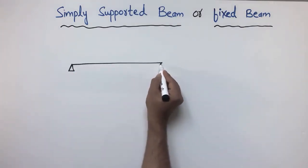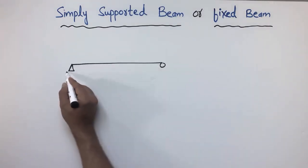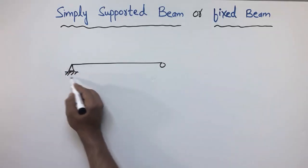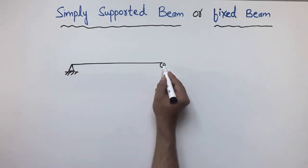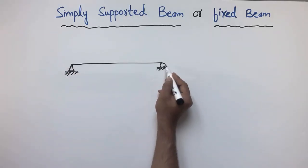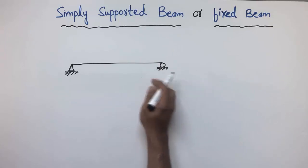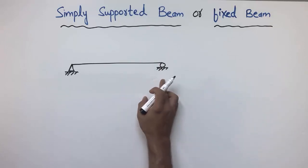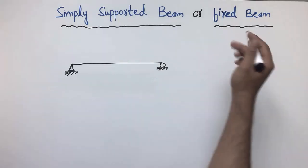First we consider the simply supported beam. The simply supported beam can be drawn like this — one end has a hinge support provided at one end, and the other has a roller support provided at the other end of the beam.